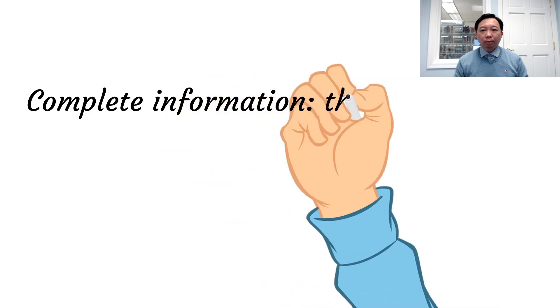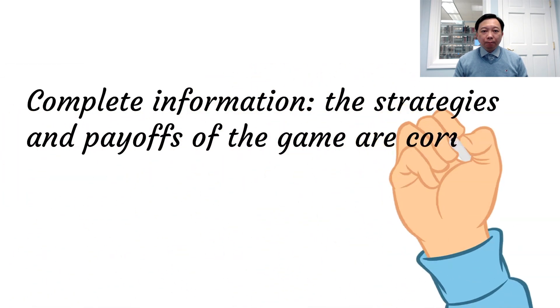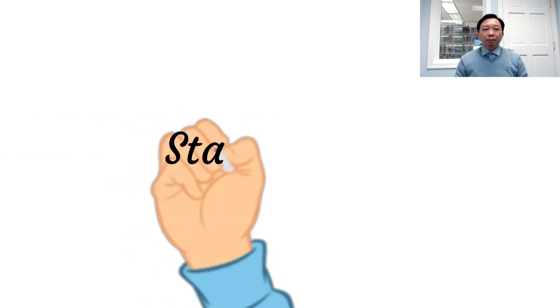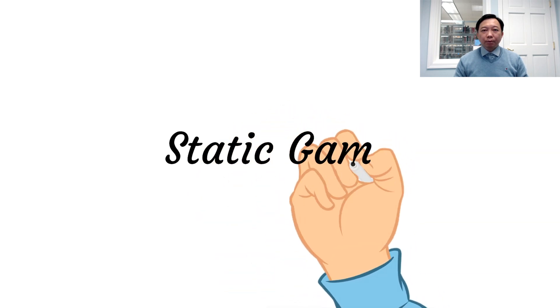If the players have complete information, the strategies and payoffs of the game are common knowledge. We begin by examining static games, in which the players choose their actions simultaneously, have complete information about the payoff function, and play the game once.